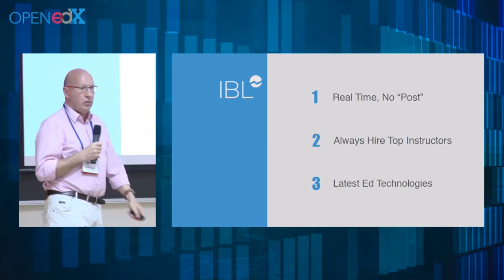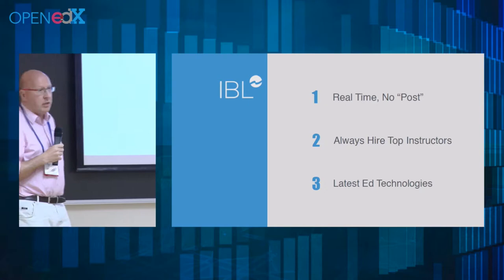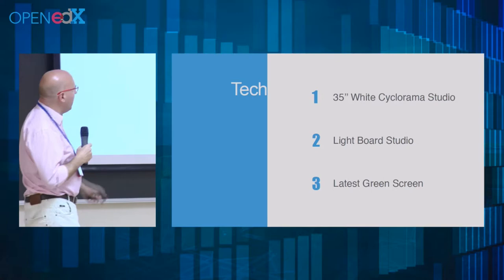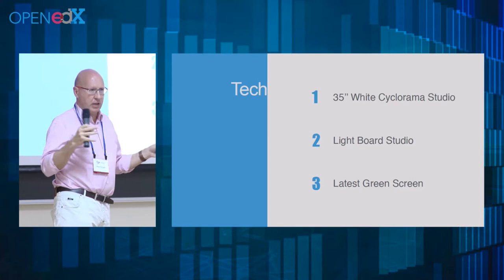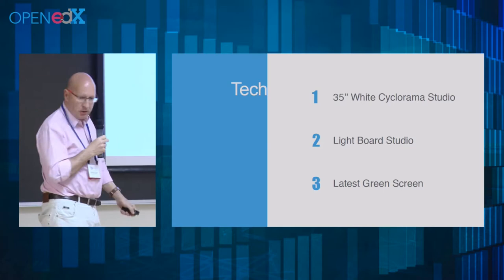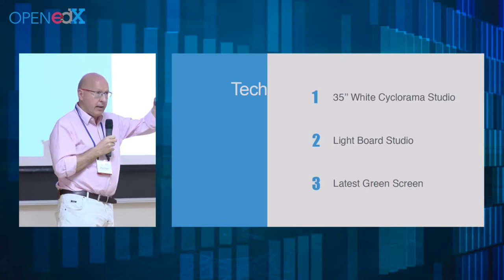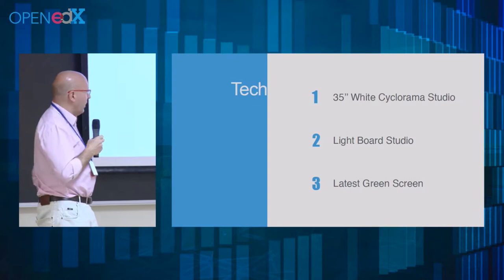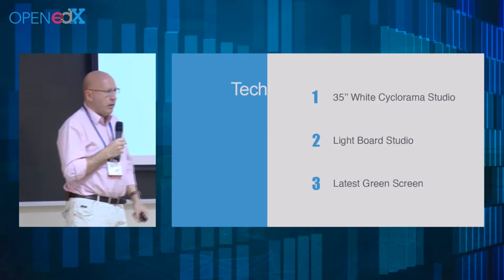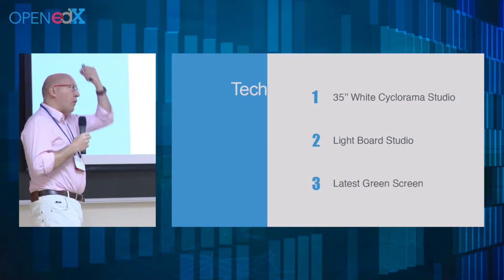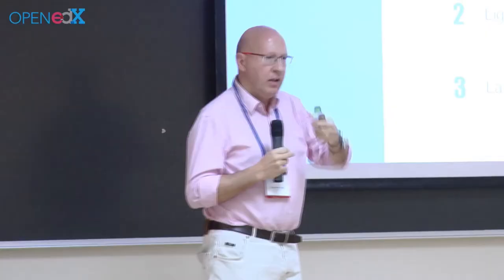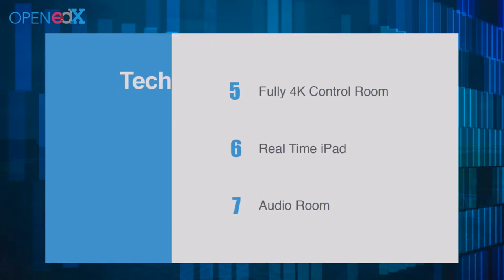The second key point was always having top instructors — that means paying them well. And obviously we needed to use all the very latest technologies. So we installed a white cyclorama — a huge, infinite background. We needed to use a light board, which is like writing on glass — a nice piece of technology, especially well-suited for STEM courses. And in terms of green screen, we wanted to use CNN-style technology, avoiding the green glow. Obviously, 4K — even if it goes to YouTube, you need 4K because the quality is much better.